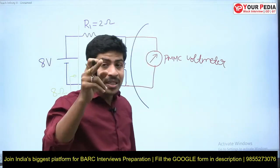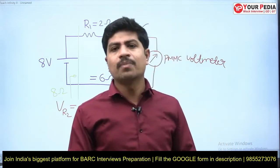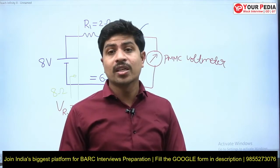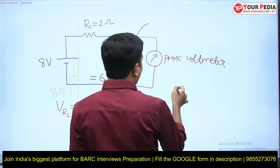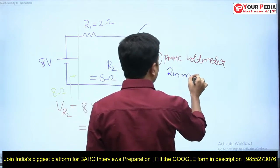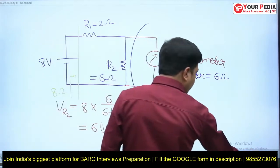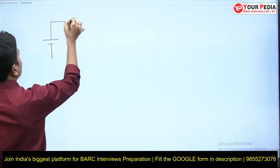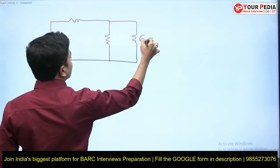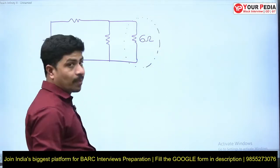Now Case 2: the meter is connected. The meter is made up of some elements and is going to have some finite amount of resistance. Imagine the meter you made has an internal resistance of 6 ohms. Now tell me — what is the impedance offered by the circuit to the source? This 6 ohms is now the meter resistance connected in parallel with R2.